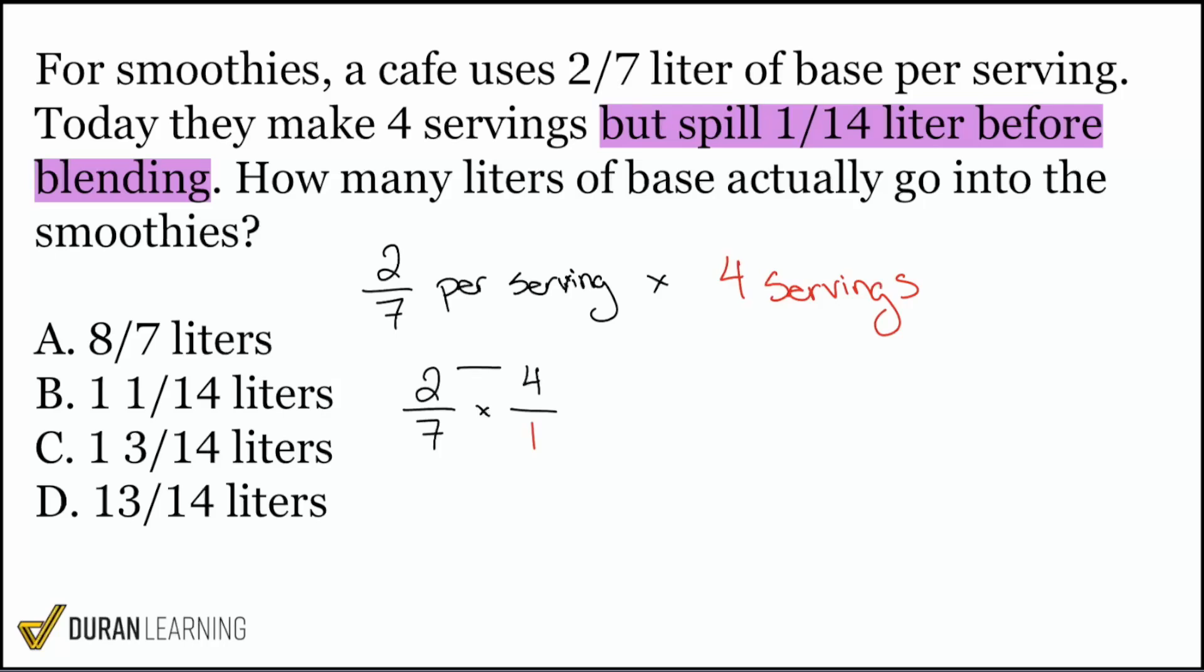You can write it as a one, make your life easy. And when you do that, you have two times four, which is eight, seven times one, which is seven. So now we have eight over seven liters. What we said we would do at the end with the spillage is we will take away one 14th. So if I write that down over here, we have eight over seven liters and we spilled one over 14 liters. And this is how we're going to get the final answer.